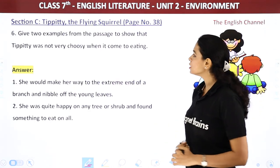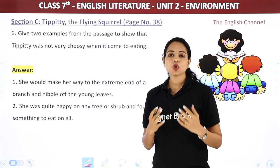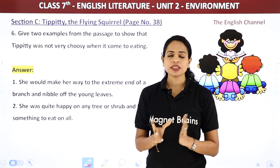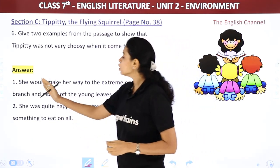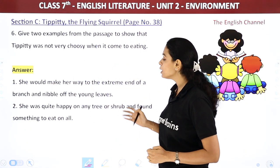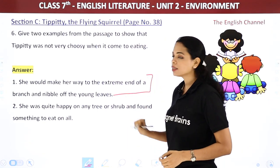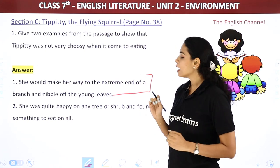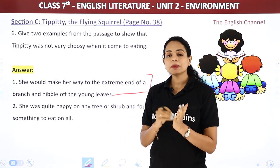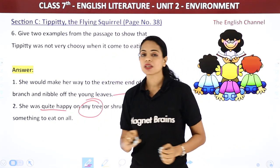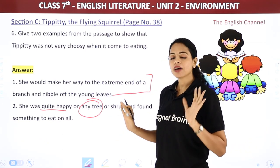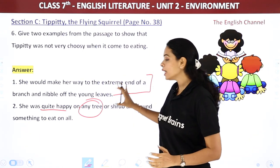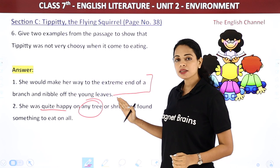Next question: Give two examples from the passage to show that Tippity was not very choosy when it came to eating. First example: she would make her way to the extreme end of a branch and nibble the young leaves. Second example: she was quite happy on any tree or shrub and found something to eat on all of them. This shows that Tippity was not fussy about eating at all — she was not very particular about what she ate.